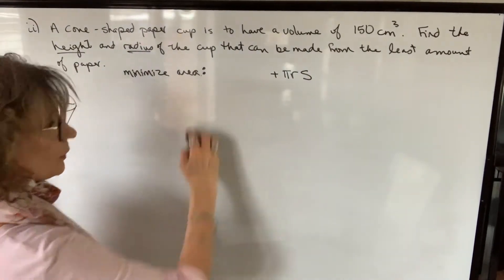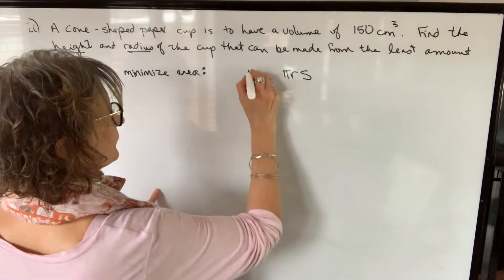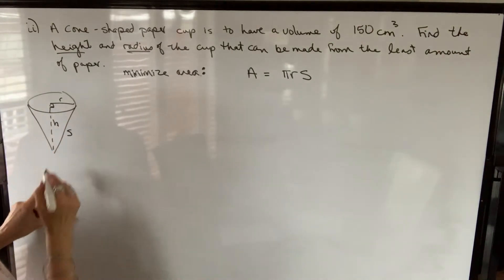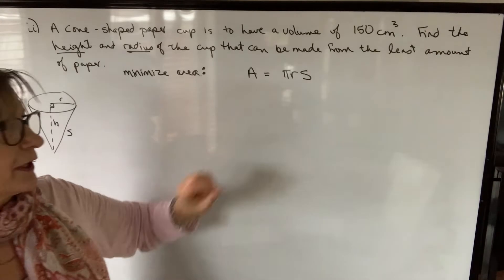the area that we're looking for will just be pi r times s. s represents this slant height. So we have two unknowns. We need to eliminate one of them.